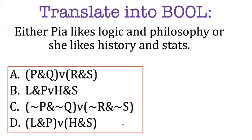Okay, last chance to pause your videos. We're going to talk about the answer now. When we translate things into Boolean, the basic rule is choose atomic sentence letters that make the most sense. Since we're talking about Pia liking logic and Pia liking philosophy, I'm going to just use L for logic, that Pia likes logic, P for Pia likes philosophy, and I'm going to use H for history and S for stats. So that's why my preferred translation is D.